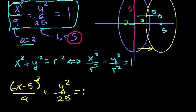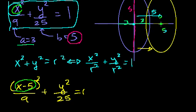The real intuition is: when x = 5, the term (x − 5) behaves just like the x term did when x = 0. When x = 5, this term is 0, and then y²/25 = 1, so y = ±5. Just like in the original, when x = 0, y²/25 = 1 gave y = ±5.